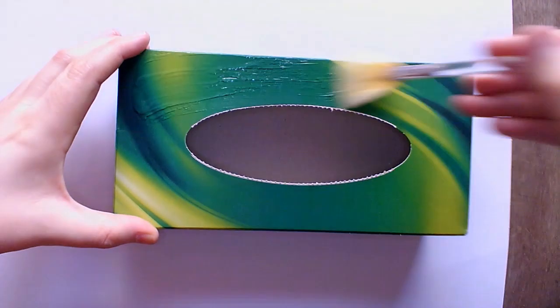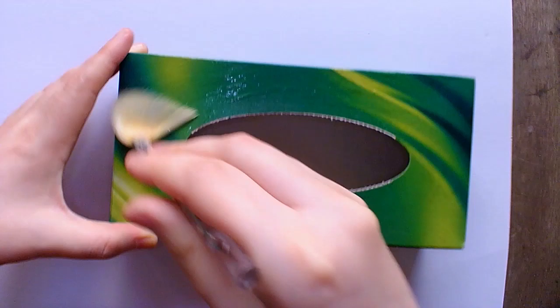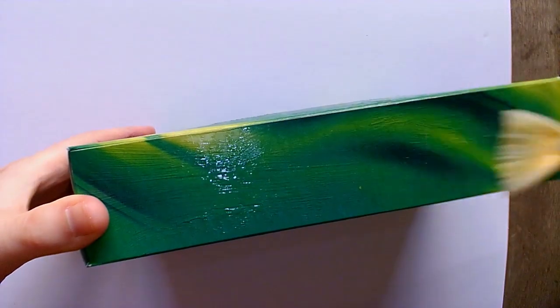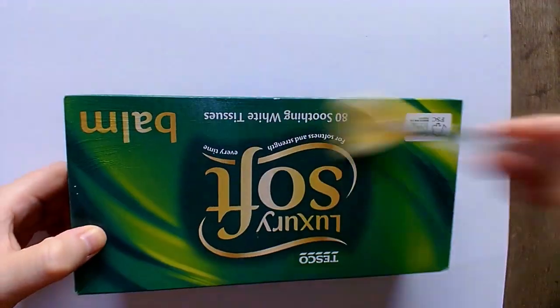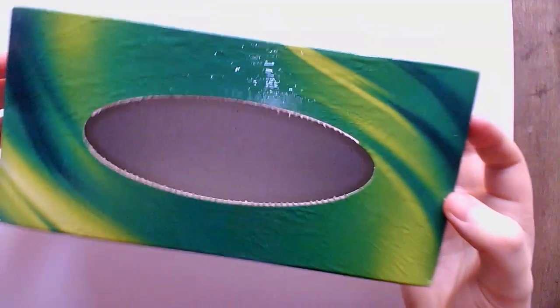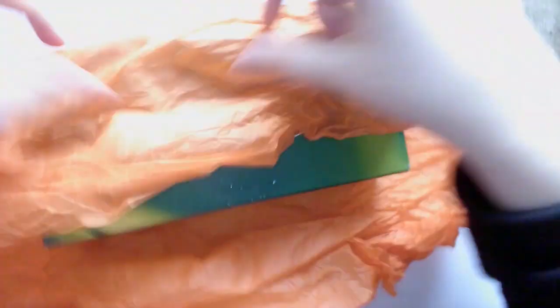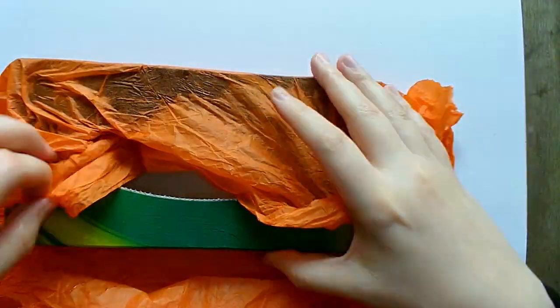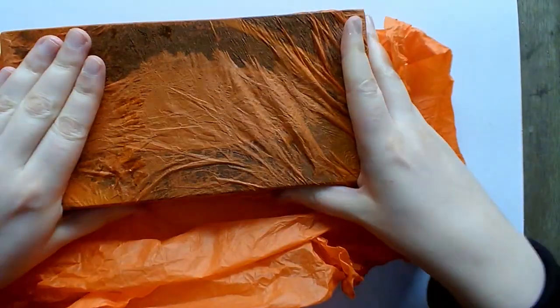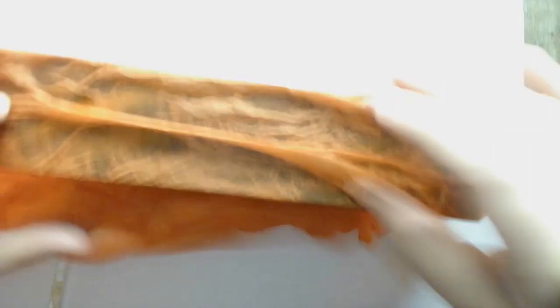Start with your empty tissue box. I'm going to cover mine in glue so that I can decorate it with tissue paper. You can decorate your tissue box however you like. You might want to put stickers on it or paper mache.